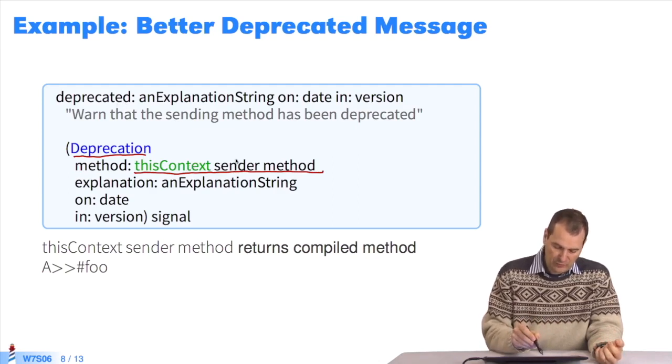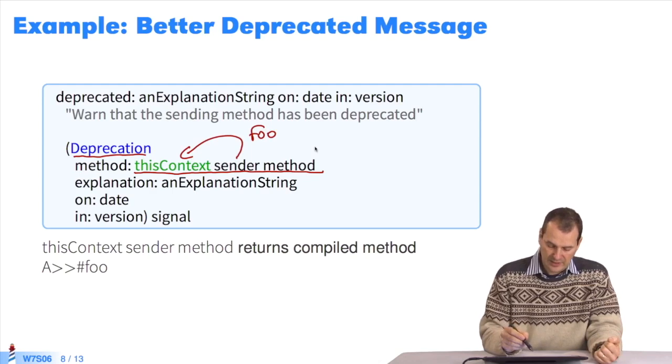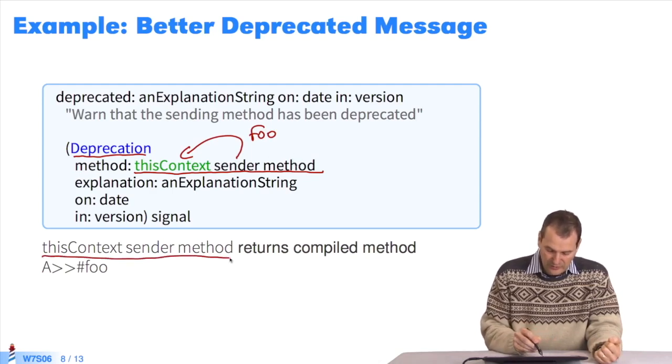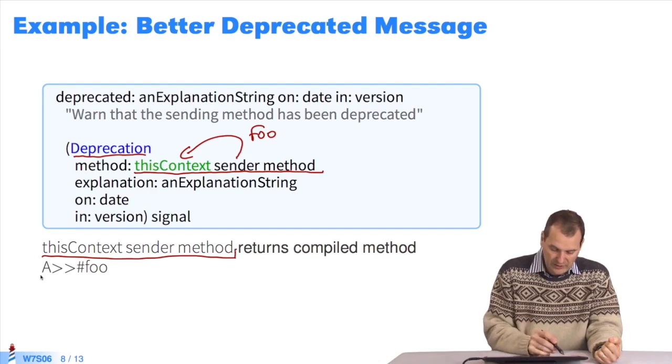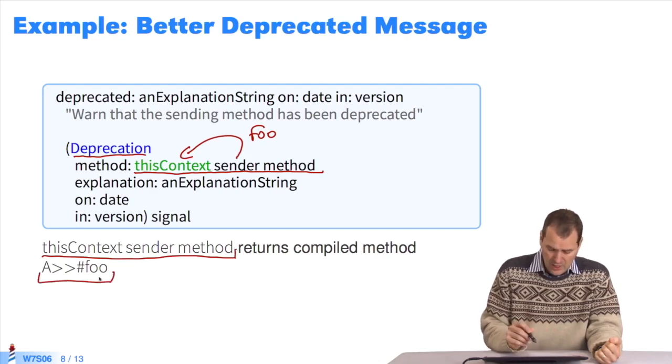Now, using sender, we can access the method caller. That will give us foo, which was our example. Then we ask for the method. This context sender method returns the compiled method, which is an object, named a foo.